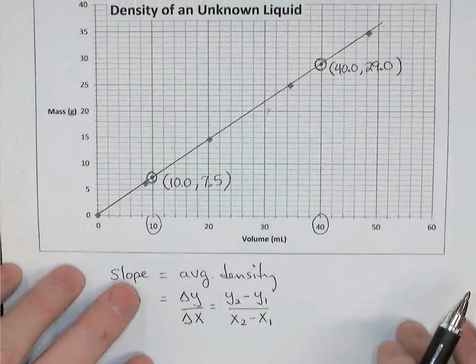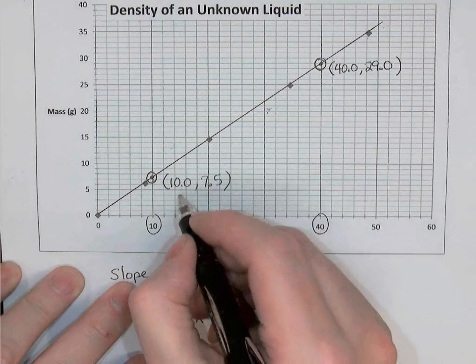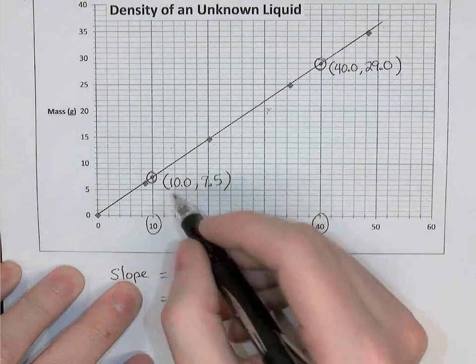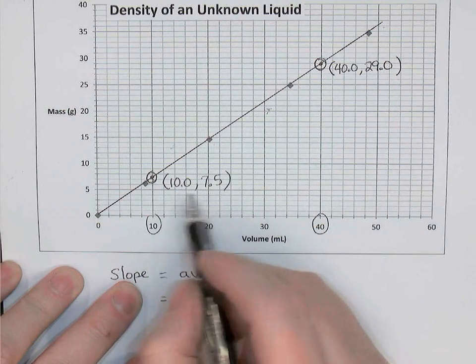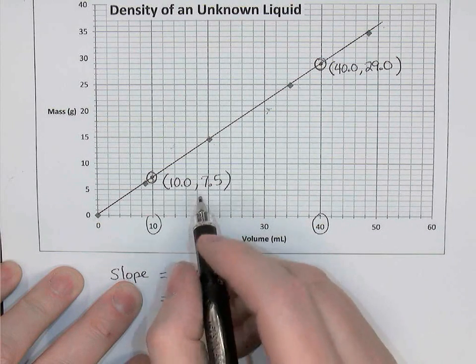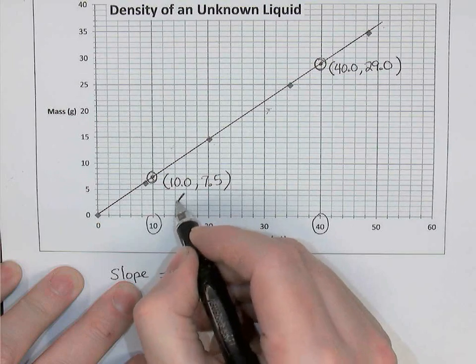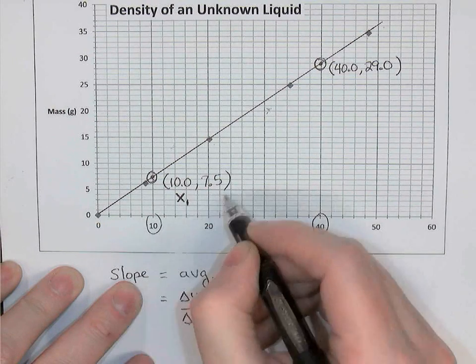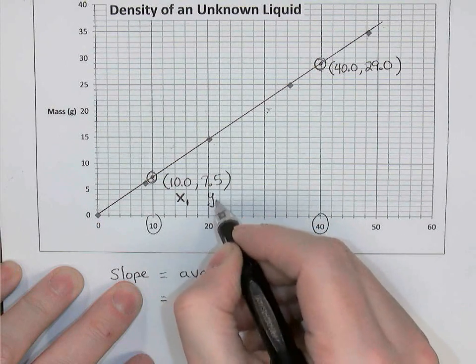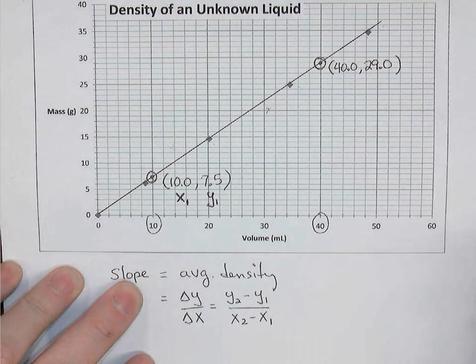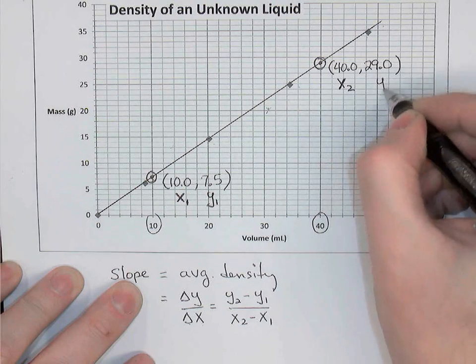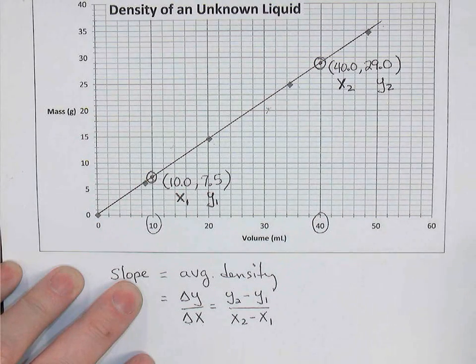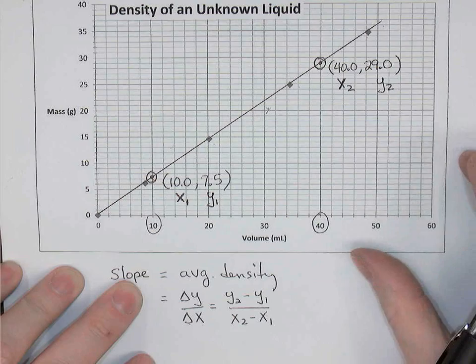Looking back at my graph, I had these two points labeled. I can choose either point and call that the first point. Just because we read left to right, I'll call this point over here on the left the first point. That means this is x1 and this is y1. So there's the x and the y value for the first point. Up here is x2 and y2. Those are the x and y values of the second point on the line.